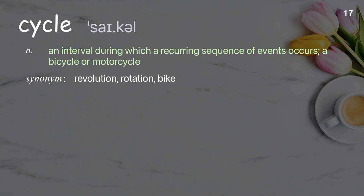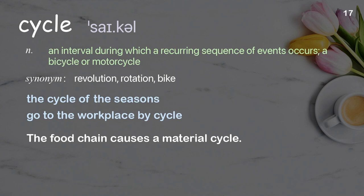Cycle: an interval during which a recurring sequence of events occurs; a bicycle or motorcycle. Examples: the cycle of the seasons, go to the workplace by cycle. The food chain causes a material cycle.